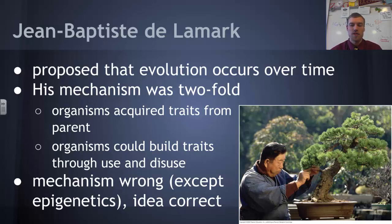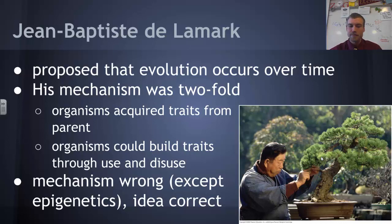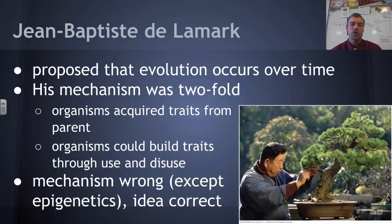An example that disproves Lamarck is bonsai trees — curated and cultivated to be small, yet they start off as normal-sized trees. That said, we did talk about epigenetics: methylation patterns can be passed on and are environmentally influenced. So there is a little bit of Lamarckian evolution that has truth to it. The idea that evolution occurs over time and organisms change is true, and acquired traits play a small role — though certainly not in the mechanism Lamarck envisioned.